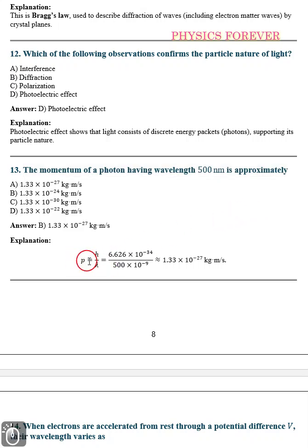The formula is then p is equal to h by lambda. So h is the constant value. Then wavelength will be given. Just we have to apply and we have to solve this all the numerical problem.